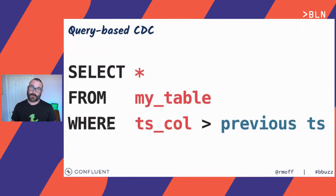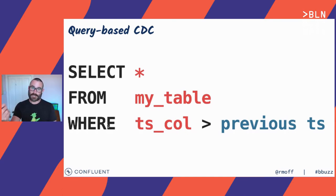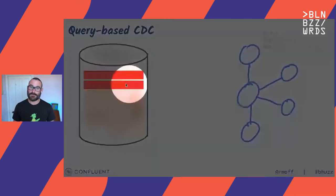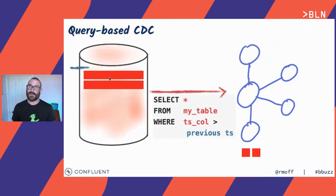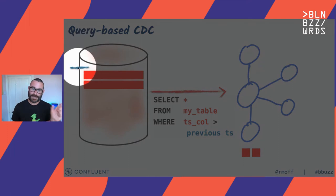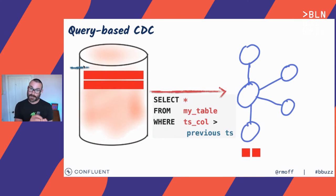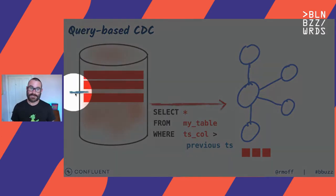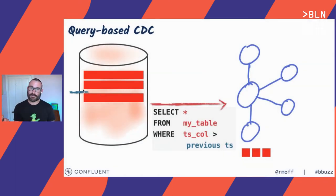Query-based Change Data Capture runs a query against the database — it polls the database asking what's changed since I last queried. It uses a particular column to indicate what's changed, which could be a timestamp or an incrementing ID. If the database has two rows, we poll and say 'select everything changed since our last watermark timestamp.' We get two events in our Kafka topic. Something changes — we insert a new row, poll the database a moment later — and we capture that new row onto our Kafka topic. That's conceptually what query-based CDC is doing. It literally runs a JDBC query against the database to work out what's changed.